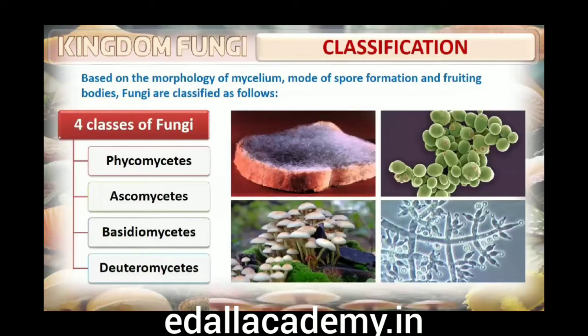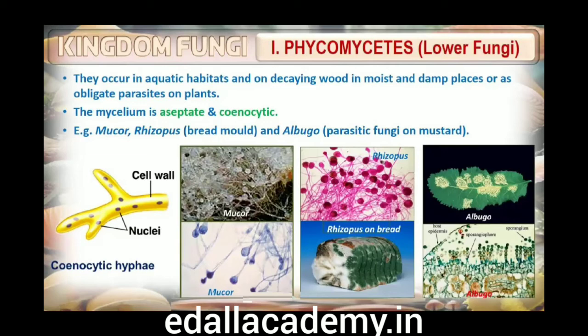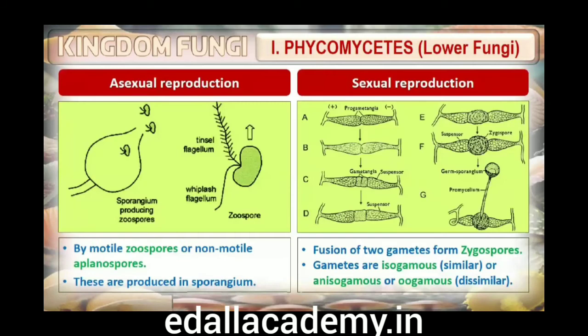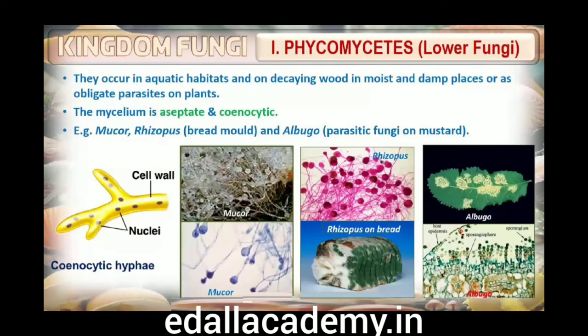First are phycomycetes. Members of phycomycetes are found in aquatic habitats and on decaying wood in moist and damp places, or as obligate parasites on plants. The mycelium is aseptate and coenocytic. Asexual reproduction takes place by zoospores (motile) or by aplanospores (non-motile). These spores are endogenously produced in a sporangium. A zygospore is formed by fusion of two gametes which are similar in morphology (isogamous), or dissimilar (anisogamous or oogamous). Some common examples are Mucor, Rhizopus (the bread mold), and Albugo (the parasitic fungi on mustard).